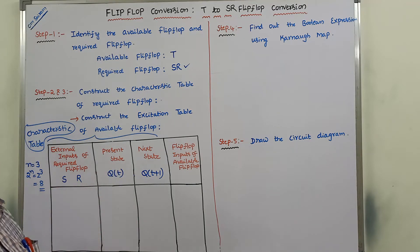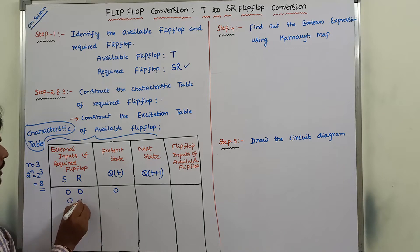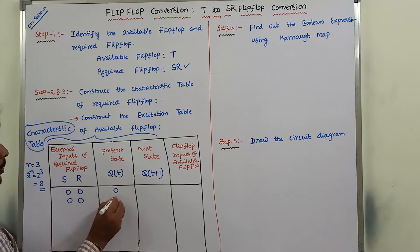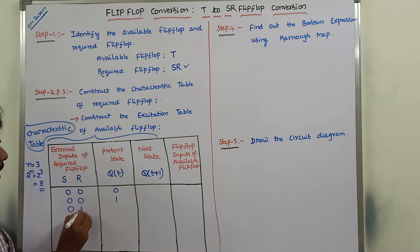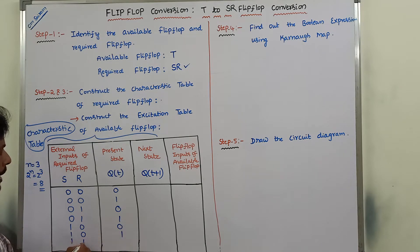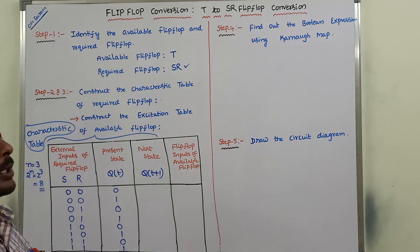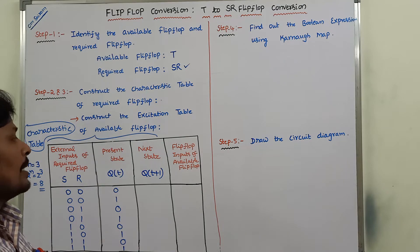The eight possible input combinations for S, R, and Q(T) are: 0,0,0 — 0,0,1 — 0,1,0 — 0,1,1 — 1,0,0 — 1,0,1 — 1,1,0 — and 1,1,1. These are the eight possible input combinations.